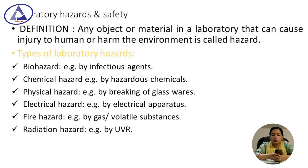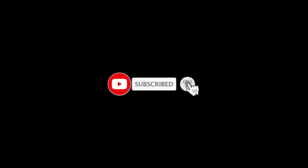Laboratory hazard: any substance or material in a laboratory that can cause injury to humans or harm the environment is called a hazard. There are several kinds: biohazard caused by infectious agents, chemical hazard caused by hazardous chemicals, physical hazard caused by breaking of glass, electrical hazard caused by electrical apparatus, fire hazard caused by volatile substances, and radiation hazard caused by UV radiation. In the next class, I will discuss the different kinds of laboratory hazard in detail. Thank you.